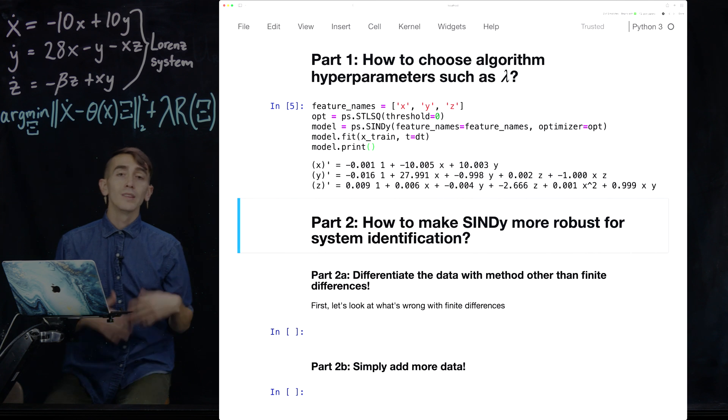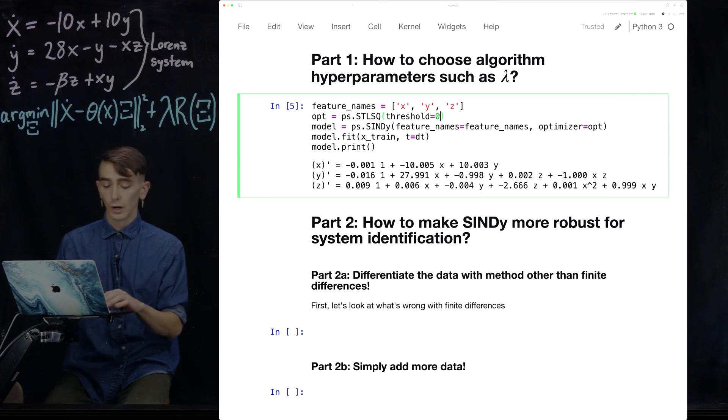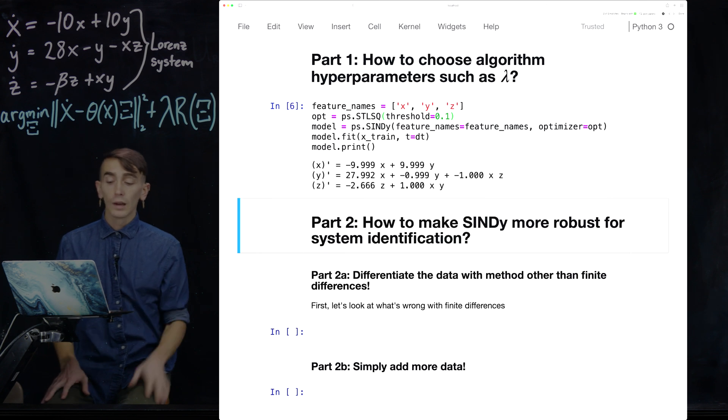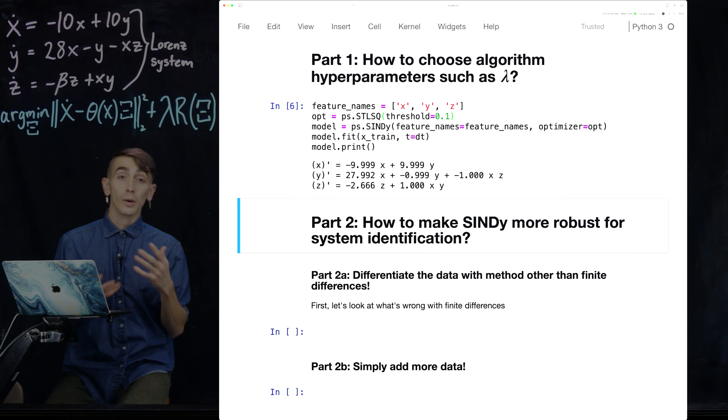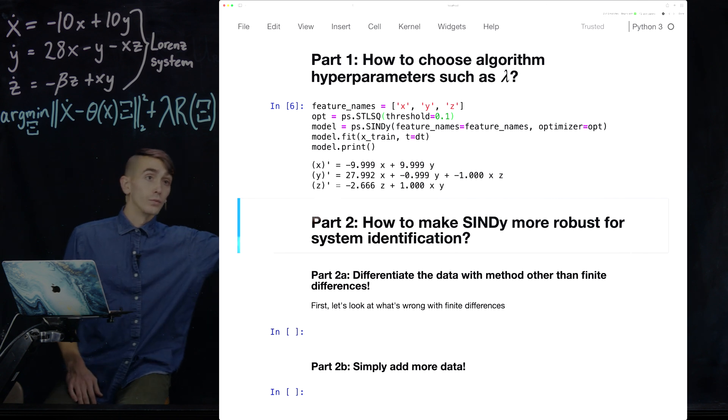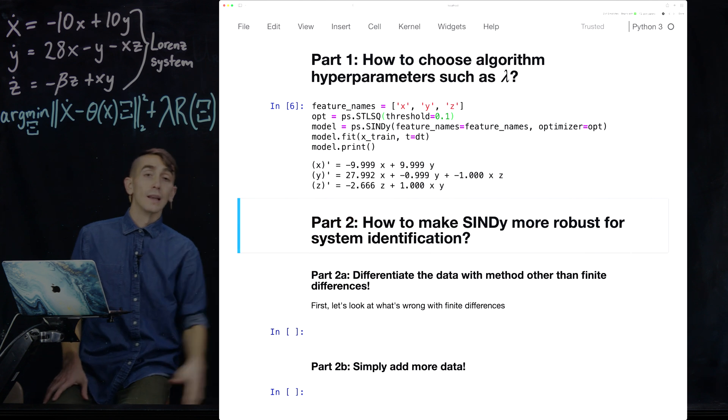So it gets pretty close to the right model. But you can see that there are a couple of these extra terms that are small but here and there show up. And ideally we would want to be able to identify the system very precisely and not have these extra small terms showing up that you typically get when you do regular regression rather than sparse regression. So if we turn lambda to something like 0.1, you can get rid of these terms and correctly get the Lorenz system. Again, only up to some numerical precision. So for instance, instead of 28, we get 27.992.